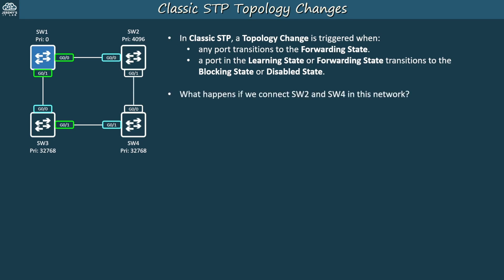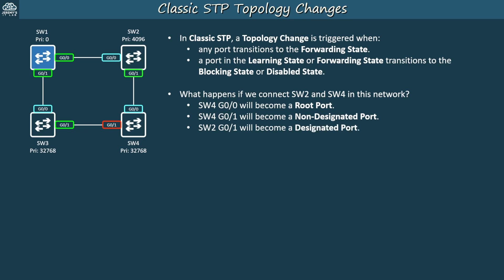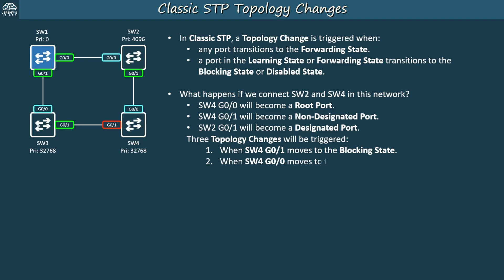What happens if we connect Switch2 and Switch4 in this network? Three main events will occur. Switch4 G00 will become a root port, Switch4 G01 will become a non-designated port, and Switch2 G01 will become a designated port. This results in a total of three topology changes: one when Switch4 G01 moves to the blocking state after becoming a non-designated port, one when Switch4 G00 moves to the forwarding state 30 seconds after becoming a root port, and one when Switch2 G01 moves to the forwarding state 30 seconds after becoming a designated port.